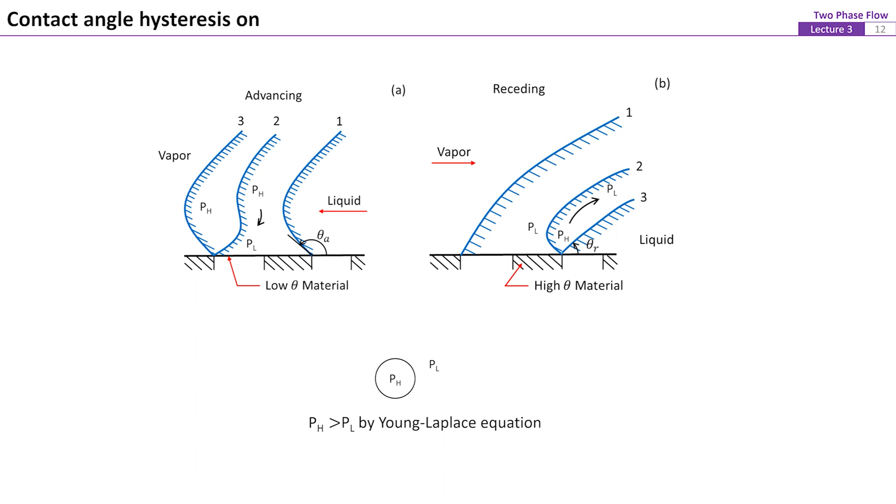However, for the receding liquid front on the same solid surface to position 2 as shown in figure B, based on the same argument, the liquid tends to flow away from the contact line region. If the bulk motion of the liquid front stops here, the contact angle will be a smaller value that corresponds to the wetted surface. Therefore, thetaR is different from thetaA.